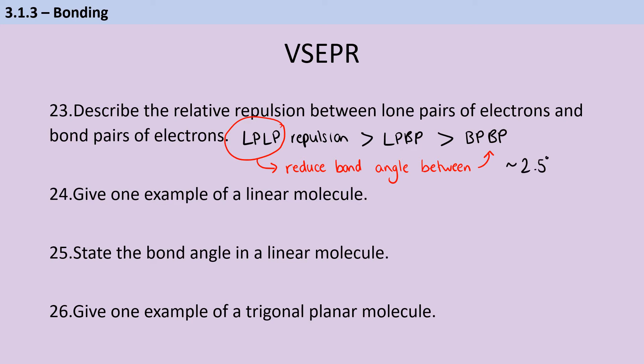Now, the next bit isn't strictly factual recall because there aren't named examples of molecules in your specification for the different shapes. But the same molecules tend to come up again and again. So if you're familiar with them, then you save yourself some time in the exam because you're not having to work out what the bond angle would be because you already know. So common examples of linear molecules include carbon dioxide, but also beryllium chloride or indeed beryllium hydride. And of course, the bond angle in a linear molecule is 180 degrees because it's just a straight line.